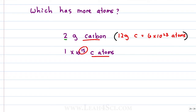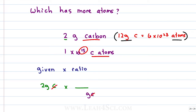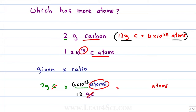Let's solve this mathematically to confirm it, by converting 2 grams of carbon to atoms using the given-times-ratio method. Our given is 2 grams of carbon. The ratio compares mass of carbon to atoms of carbon, with grams on the bottom so units cancel and atoms remain on top. Plugging in numbers: 2 grams times (6 times 10 to the 23rd atoms / 12 grams). Simplify before calculating — 6 and 12 both divide by 2 giving 1 over 2, and 2 and 2 cancel — giving 1 times 10 to the 23rd atoms, which is way greater than 1 times 10 to the 15th.